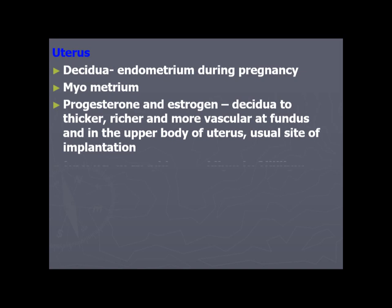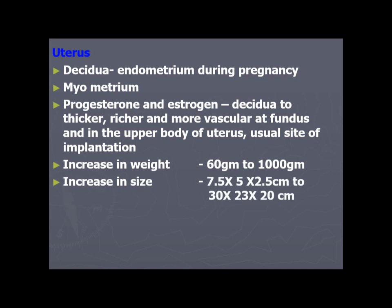The uterus increases significantly in weight — from a pre-pregnant weight of only 60 grams to nearly 1,000 grams at term. Pre-pregnant uterine size is 7.5 × 5 × 2.5 cm, increasing to 30 × 23 × 20 cm — that is, 30 cm in length, 23 cm in width, and 20 cm in thickness.